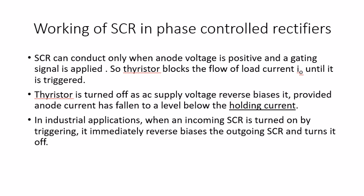In industrial applications, an incoming SCR is turned on by triggering. It is immediately reverse-biased by the outgoing SCR, which turns it off. When the triggered pulse output goes to another thyristor and that thyristor does not pass the current — that is what I explained as the holding current — it works as a stop switch in the industries.